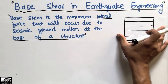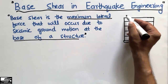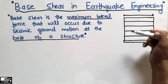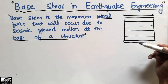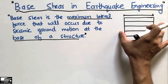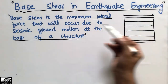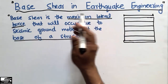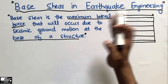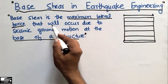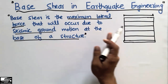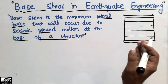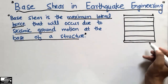Let's consider this is my building, having only a single bay — bay means one horizontal direction — but it has different floors. I'm taking this as an example to explain the base shear concept. The base shear is the maximum lateral force, applied sideways, that occurs at the base of the structure due to the earthquake.